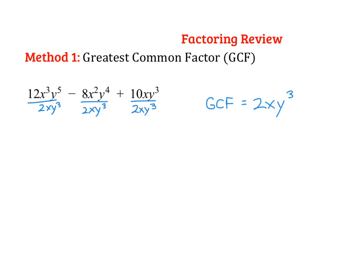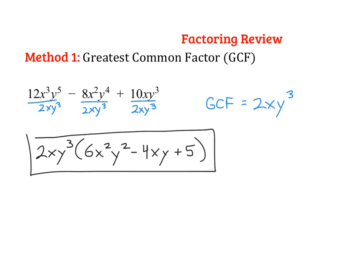So when you divide, it doesn't just disappear. We're essentially dividing it out and placing it out front. So please don't forget to write your GCF. It should be the very first thing you write. And then you just do your division and write what's remaining. So here we'd have 6x squared y squared minus 4xy plus 5. And this is as much as you can factor. You should always double check what's remaining to see if there's another way you can factor, but in this case there's not, so you're all done.